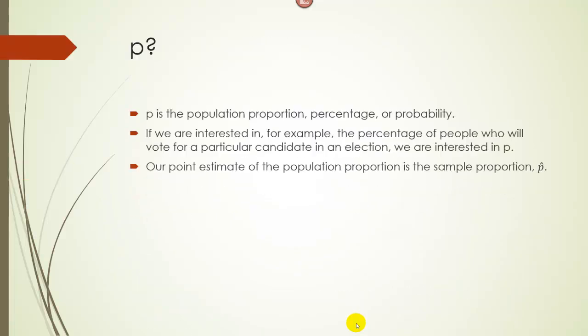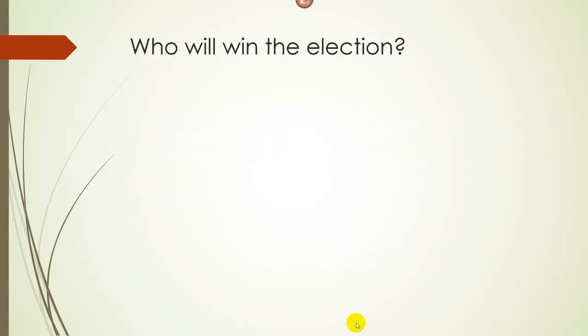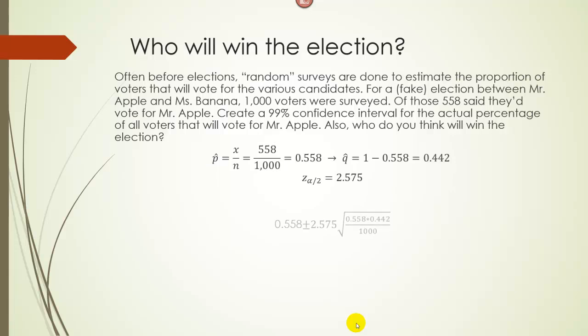Our Z alpha over 2 is 2.575. Then we take our P hat estimate, 0.558, and add and subtract the Z value times the square root of P hat Q hat over N. So that's 2.575 times the square root of 0.558 times 0.442 over 1,000. Be very careful with this calculation. Make sure you do 0.558 times 0.442 divided by 1,000 first, then the square root.